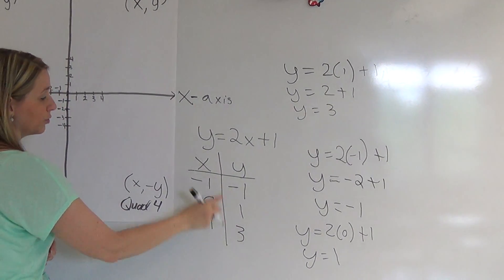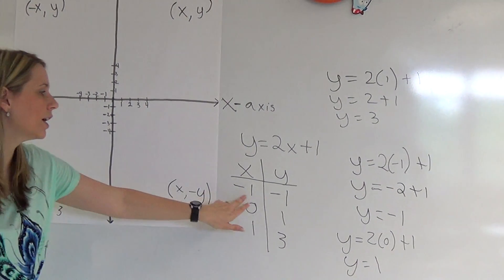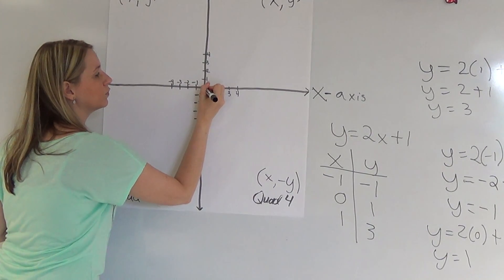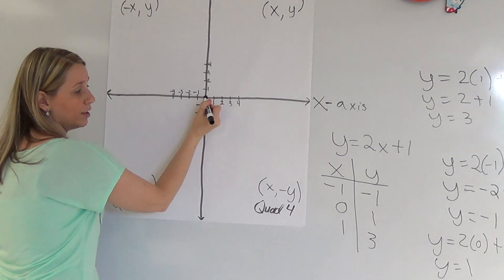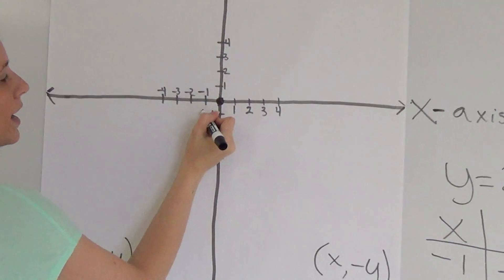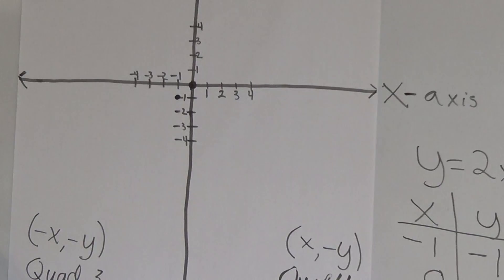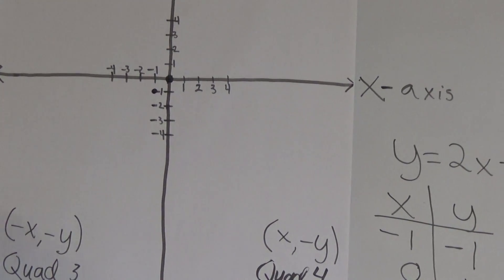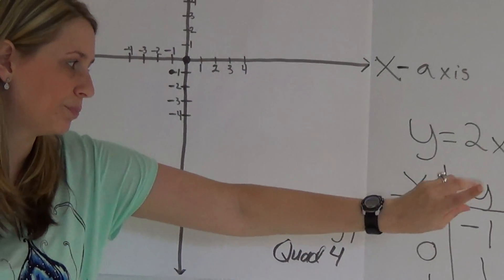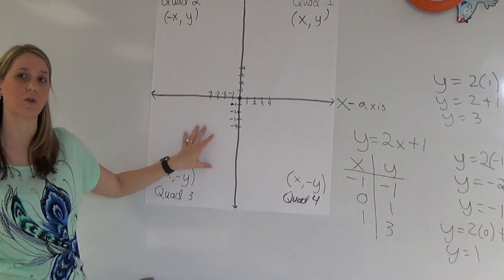So here are your three ordered pairs. Your first one is negative 1, negative 1. You start at your origin — this is your origin. You go to negative 1 on the x-axis, and then you go negative 1 on the y-axis, and you put a dot there. And that's the point negative 1, negative 1. That's in quadrant 3 because they're both negative — that automatically tells you they're going to be in quadrant 3.